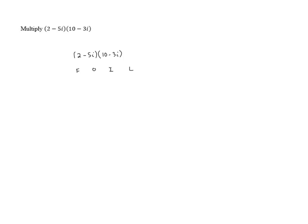The product of the first terms is 2 times 10, which gives us 20. The product of the outer terms is 2 times negative 3i, which gives us negative 6i. The product of the inner terms is negative 5i times 10, which is negative 50i.